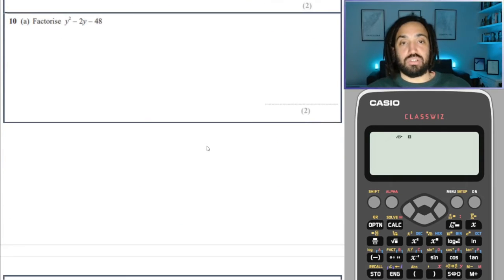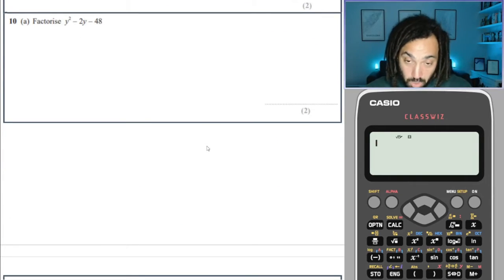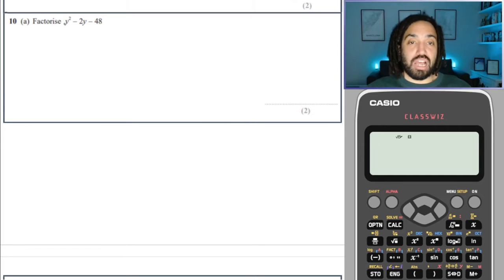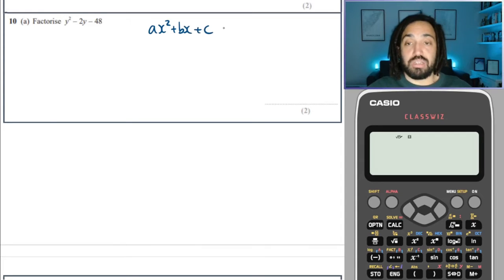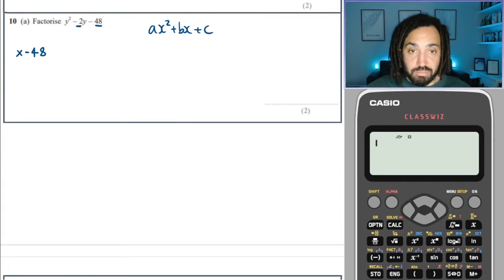Aha. On to factorizing a quadratic. This is a single squared term, so we need to just think about the C term, and when I say C, I mean that any quadratic can be written like this.